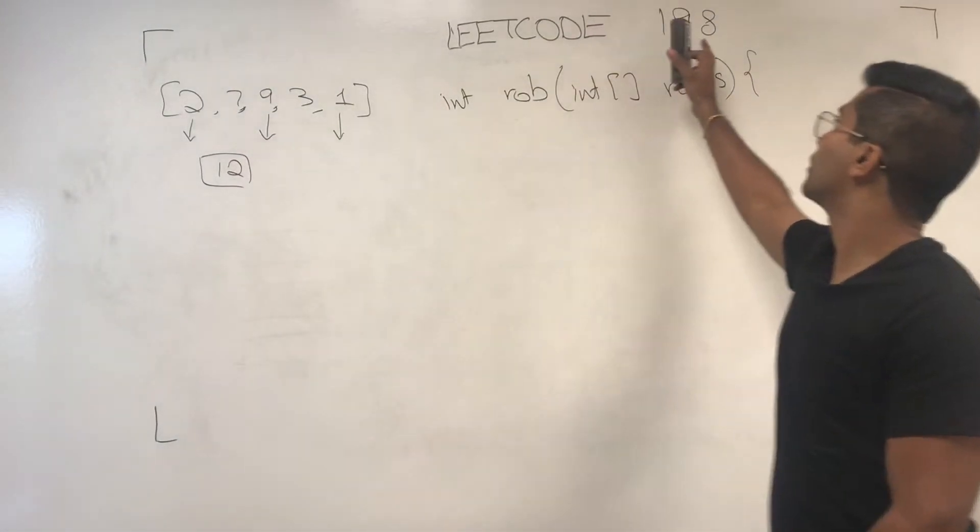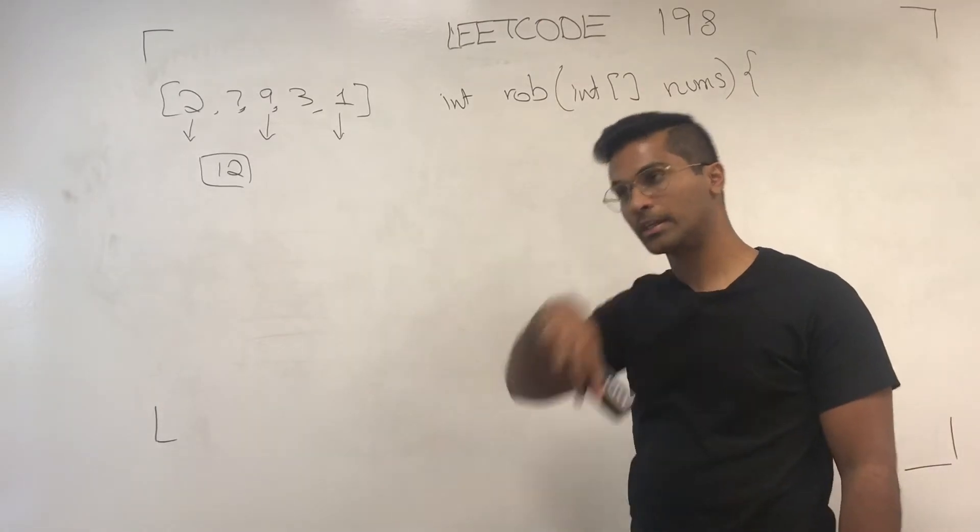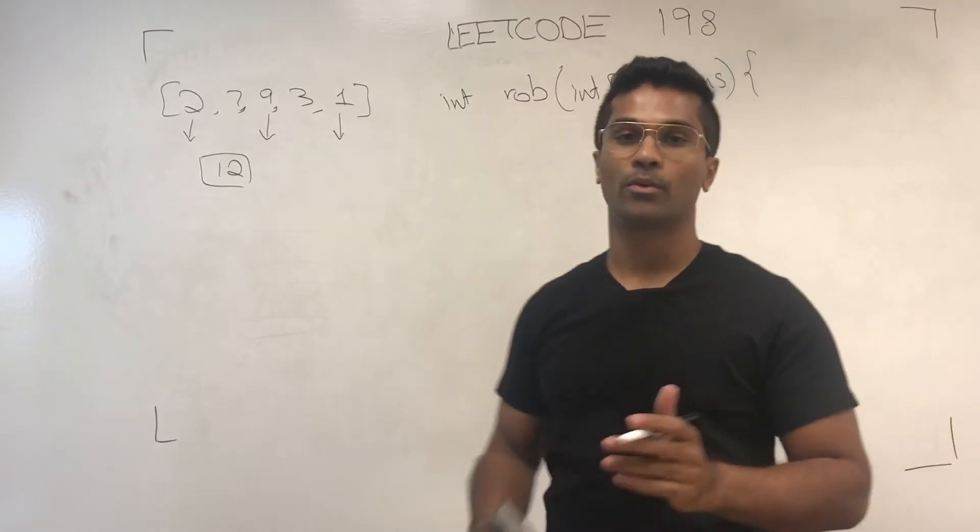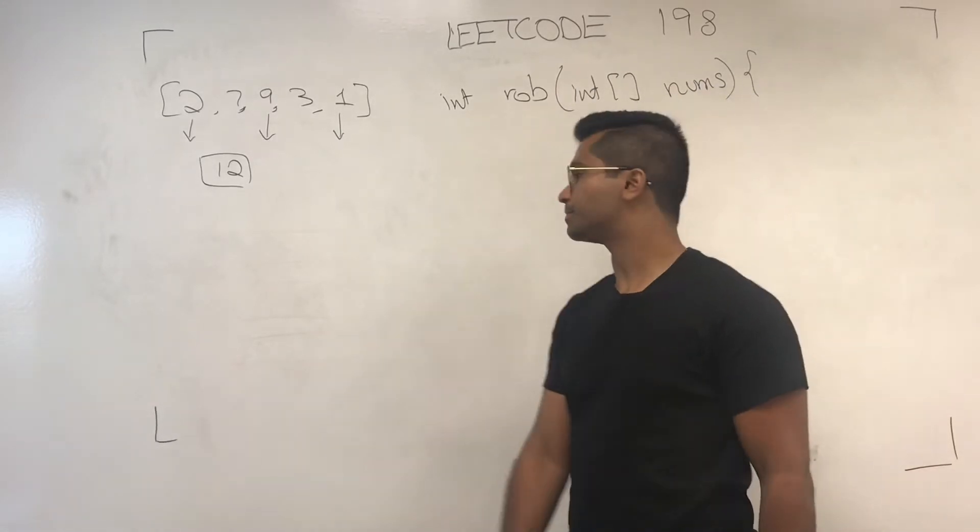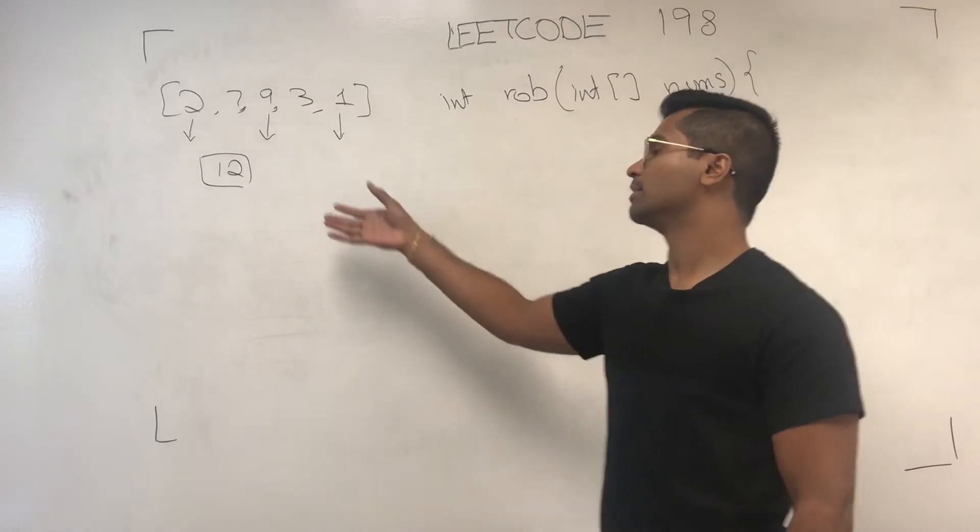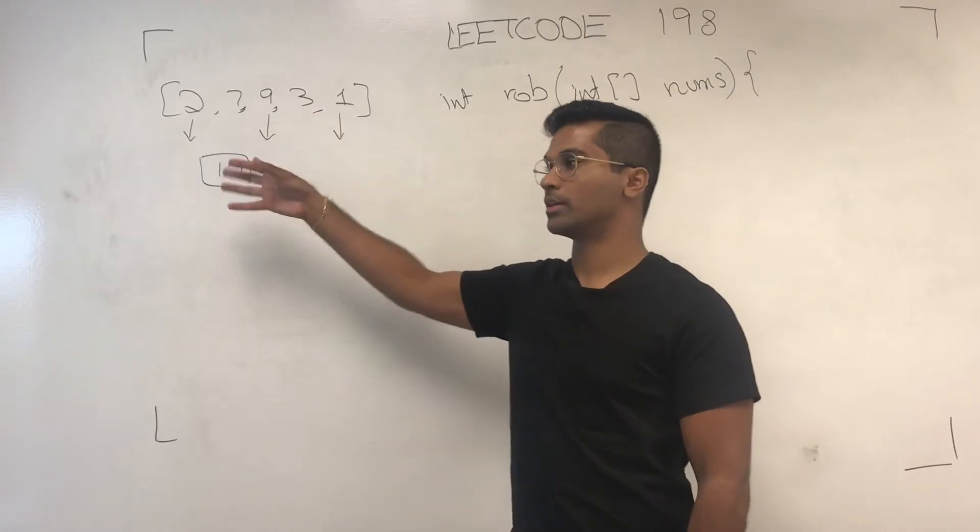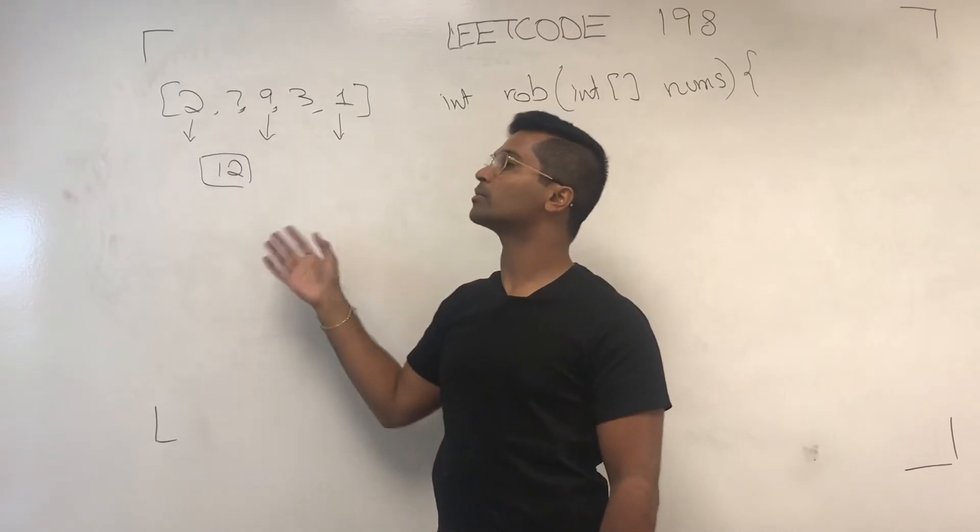What's up everyone, today we're going to be going over LeetCode 198 House Robber. This is a very well-known dynamic programming question, but I still wanted to just go over it. The question is there's a robber trying to rob houses and these are the values of the houses he can rob.